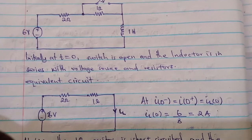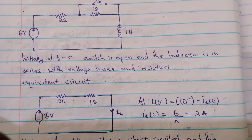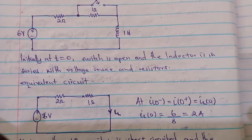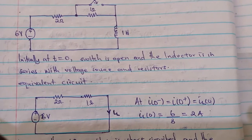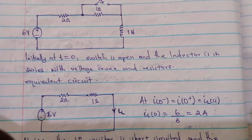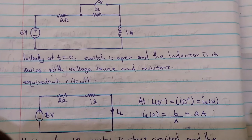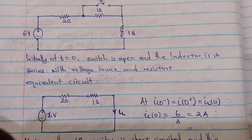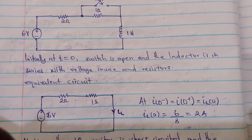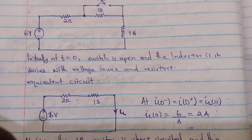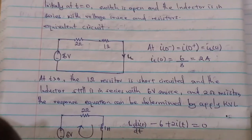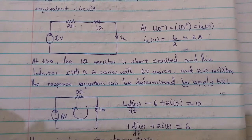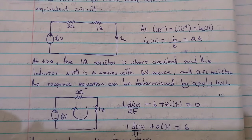The initial condition states: current i(0⁻) equals current i(0⁺), which equals the current at time t equals zero flowing through the inductor. When we take a loop through that circuit, we see current I flowing through the inductor at t equals zero, which gives us two amperes.